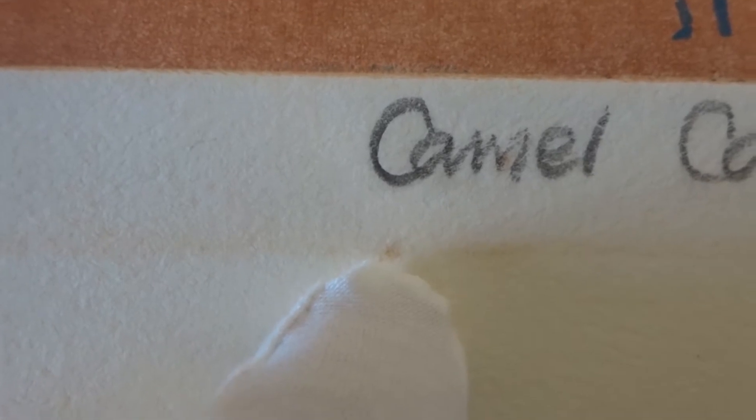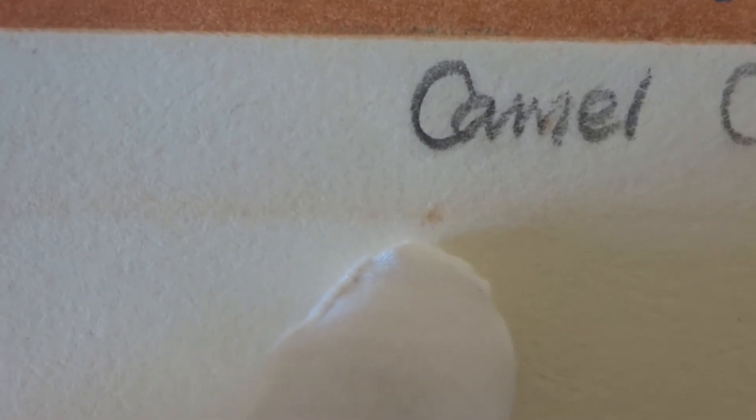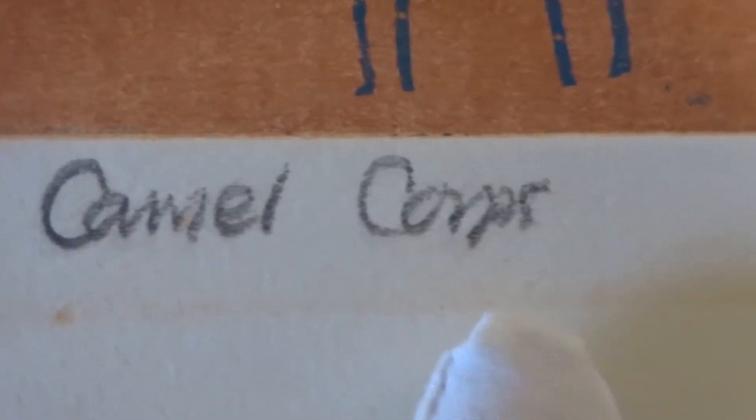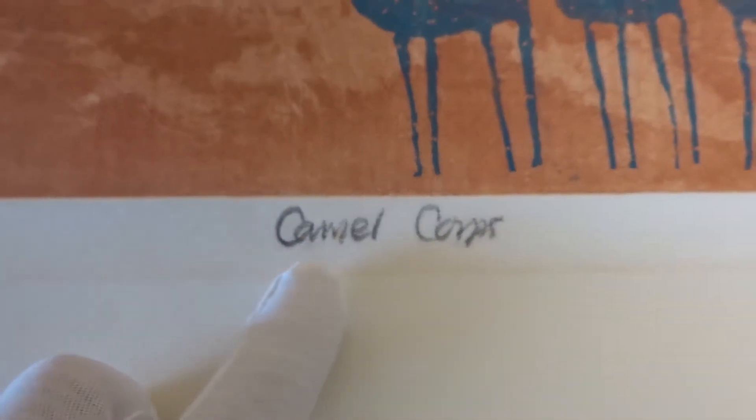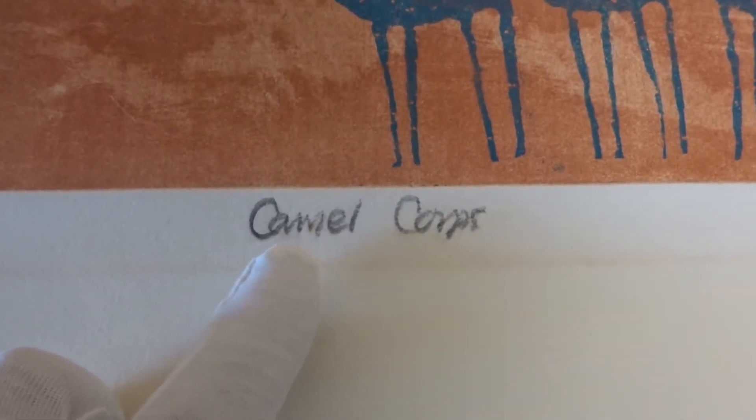We can still see that there's a large foxing spot there. There are some impurities as well in the paper that should be able to be washed out however. Later on I'm going to need to be very careful around this graphite area so that I don't accidentally rub out the fact that he has titled the print.